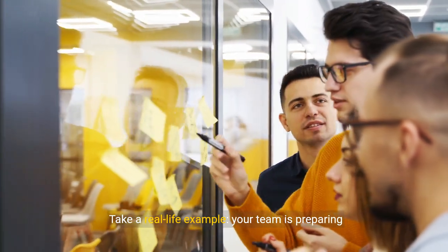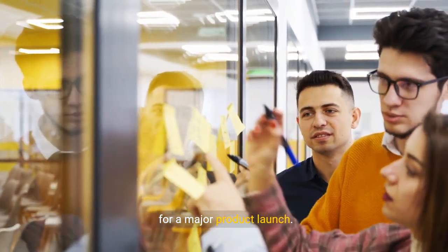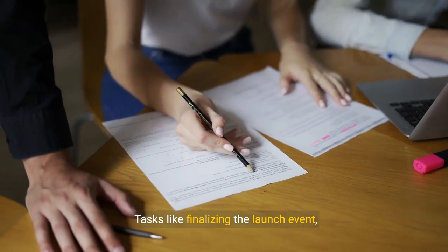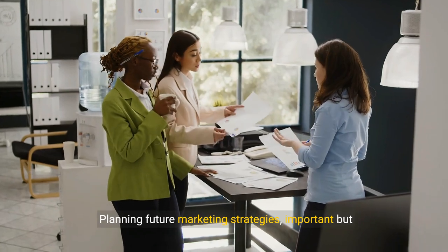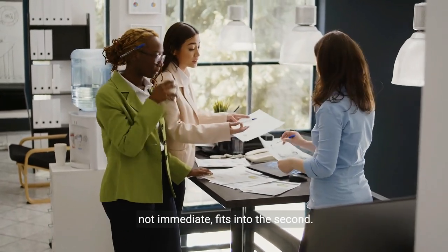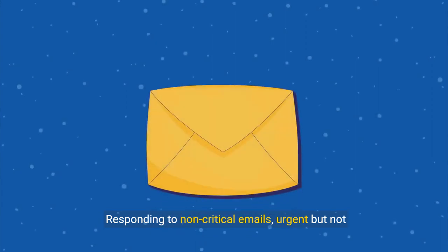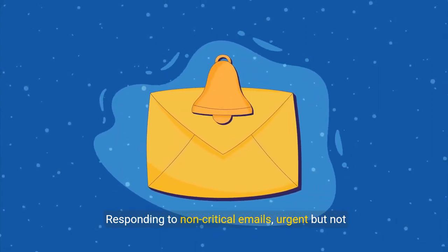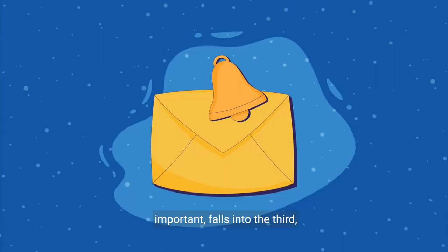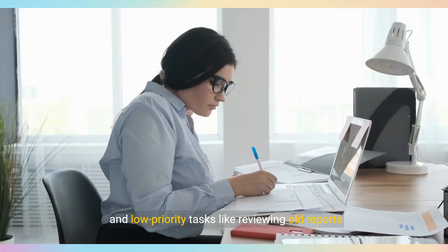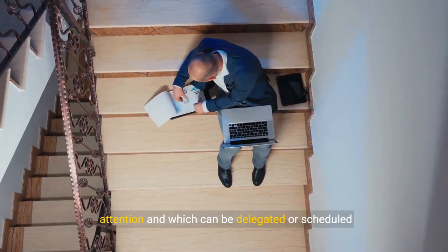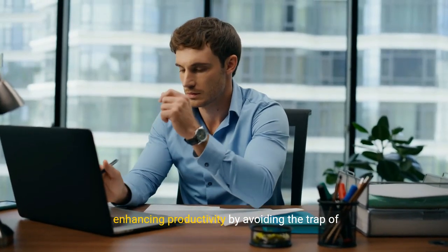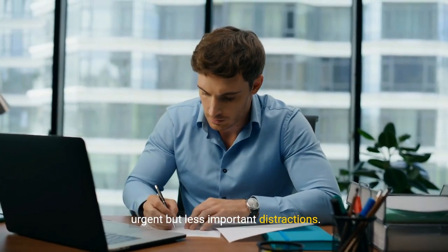Take a real-life example. Your team is preparing for a major product launch. Tasks like finalizing the launch event, both urgent and important, go in the first quadrant. Planning future marketing strategies, important but not immediate, fits into the second. Responding to non-critical emails, urgent but not important, falls into the third, and low-priority tasks like reviewing old reports settle in the fourth quadrant. This approach clarifies which tasks need immediate attention and which can be delegated or scheduled for later, enhancing productivity by avoiding the trap of urgent but less important distractions.